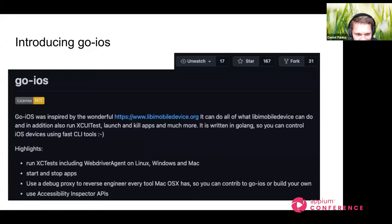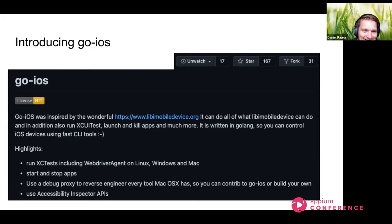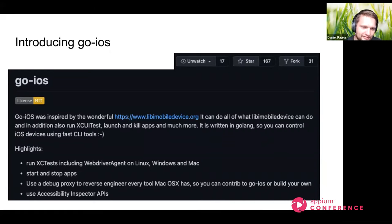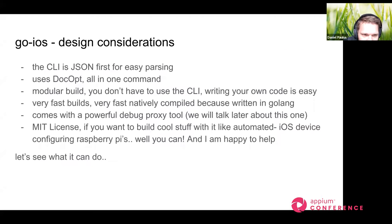This is why I wrote Go iOS. It was inspired by libimobiledevice, which does something similar but is written in C. I think Golang is a little easier to learn than C — probably a lot of C developers are hating me for that comment. Go iOS can now do most of what libimobiledevice can do, but it can do more. Particularly, it can launch XCTests, which is important for Appium, because Appium for iOS real devices uses WebDriver Agent — a wrapper around the XCUITest framework — and you can launch apps, kill apps, and much more.